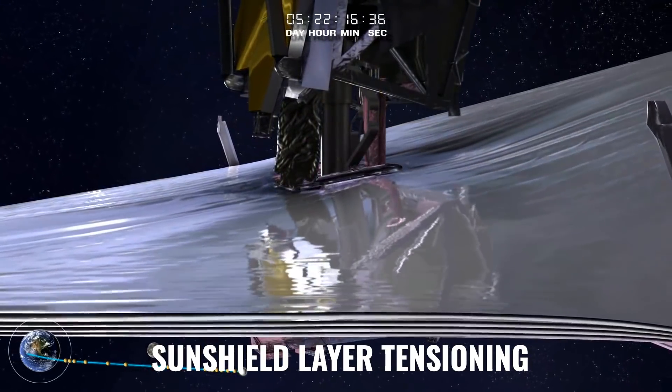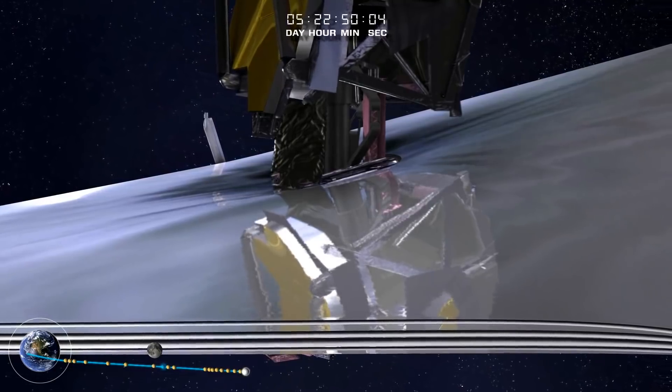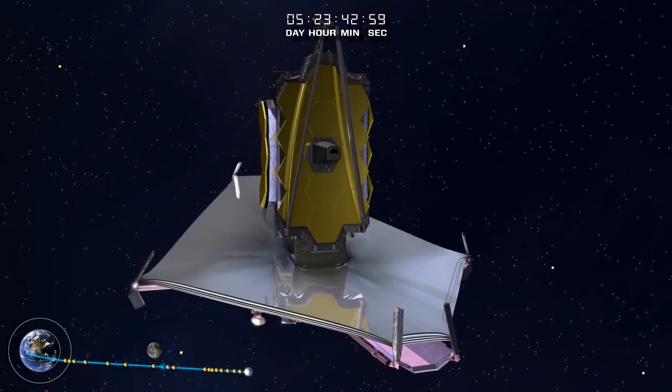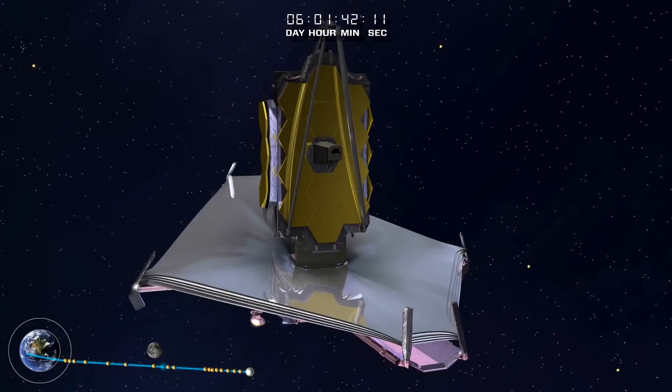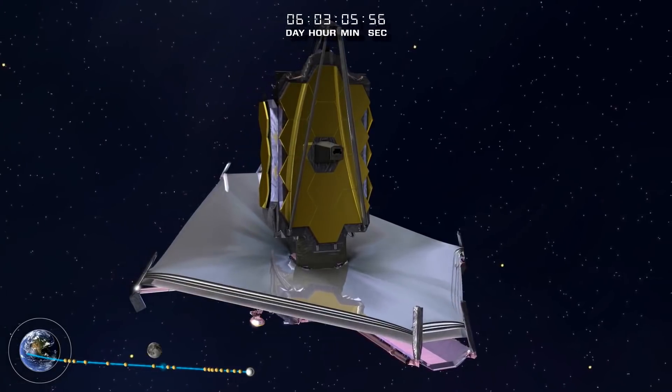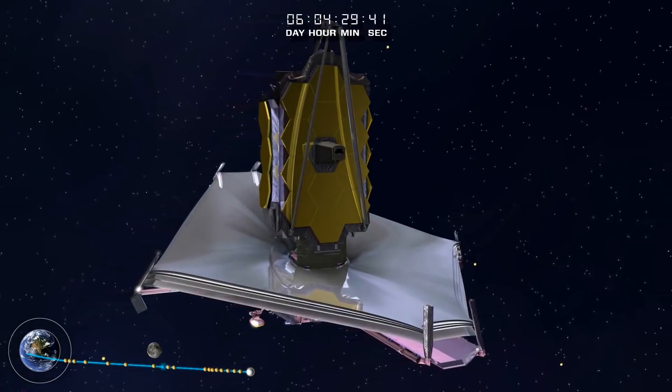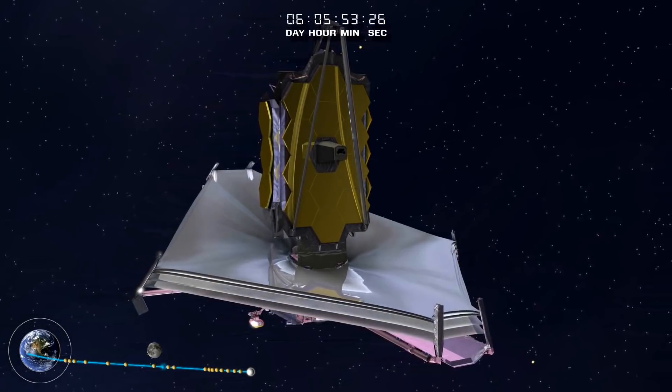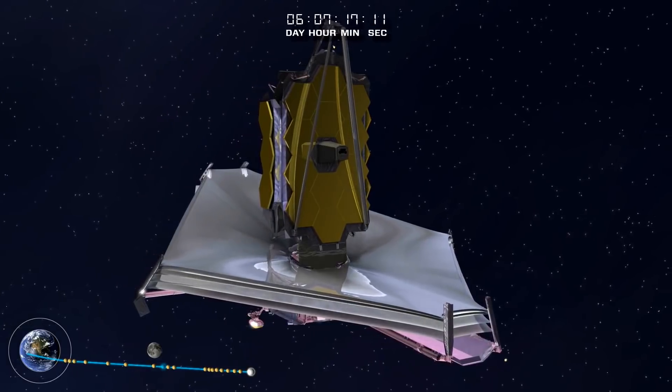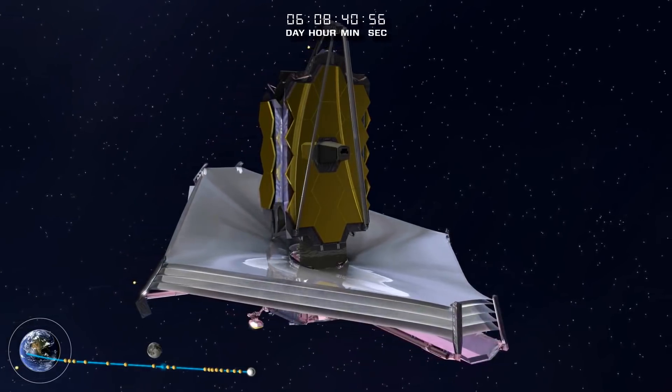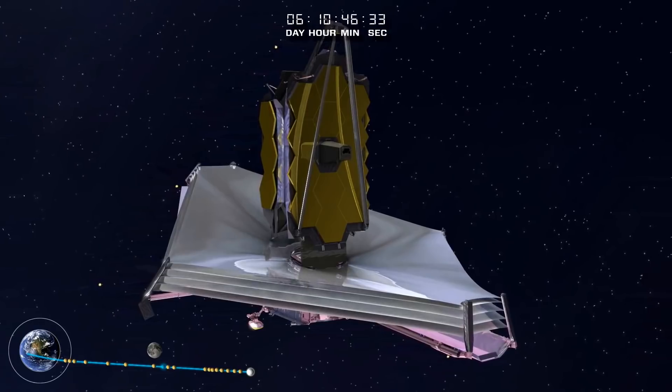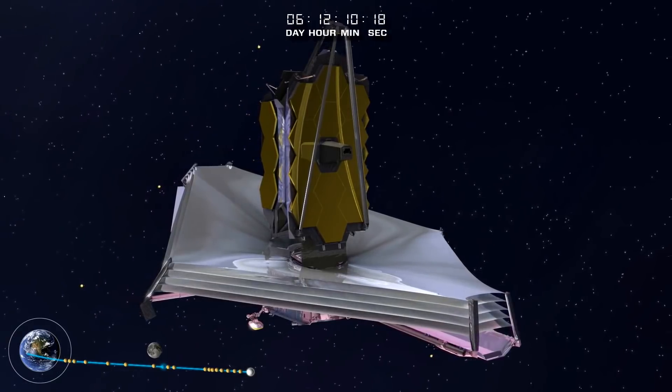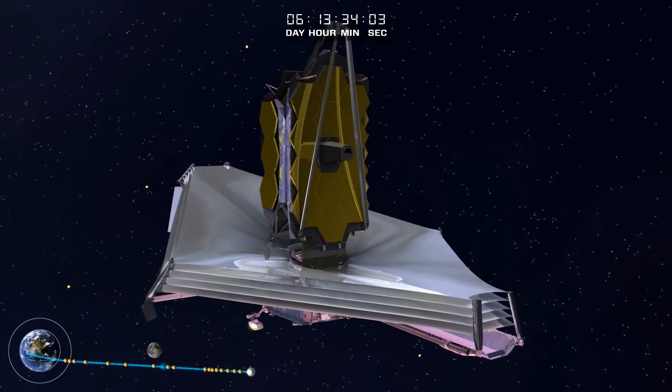Sunshield layer tensioning ongoing. This operation is a multi-step, two-day activity, which completes the final membrane releases as well as tensioning the five layers of the sunshield. After initial sunshield deployments of the forward and aft UPS, which carry the fully folded sunshield, followed by the port and starboard mid-booms, which support and initially unfold all five layers of the sunshield together, each layer is successively tensioned.